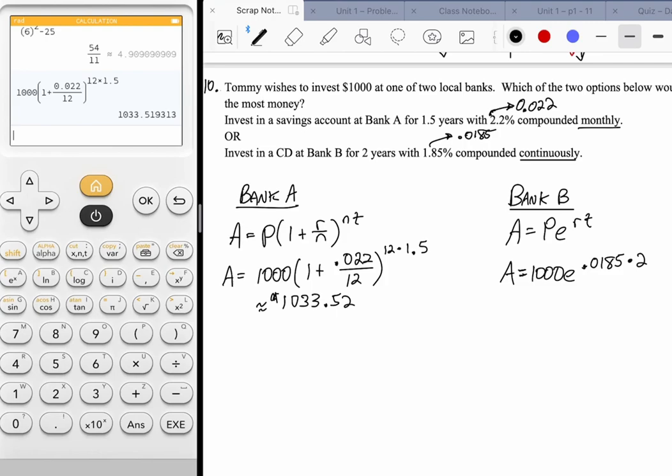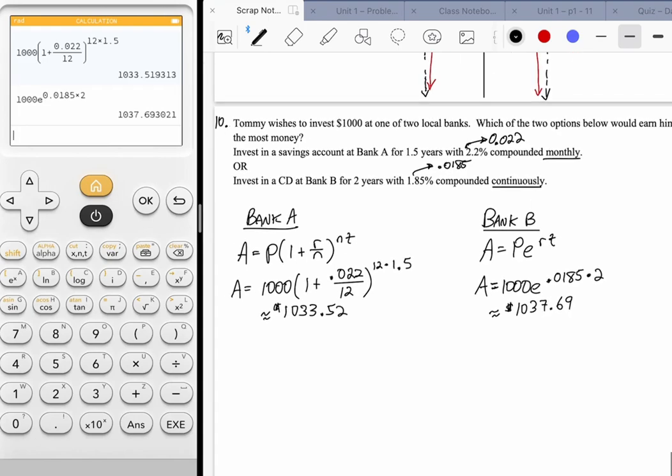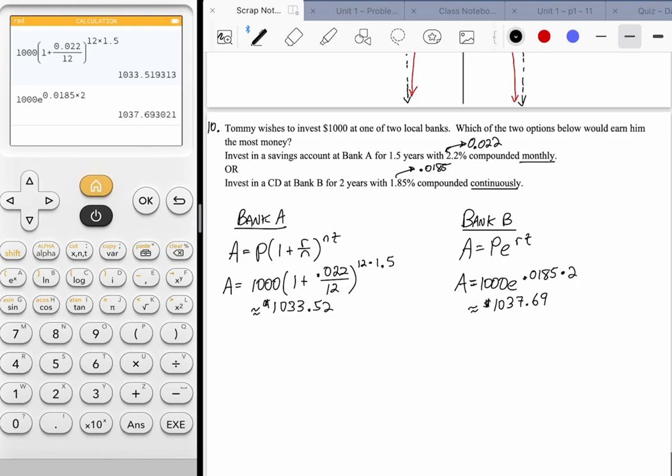Then 1,000 e to the 0.0185 times two. And that's going to give me about 1037.69. Now, which of the following would earn him the most money? It's pretty cut and dried. Bank B earns the most money.